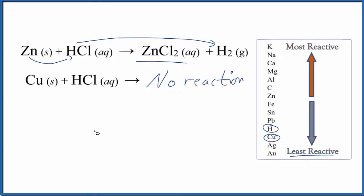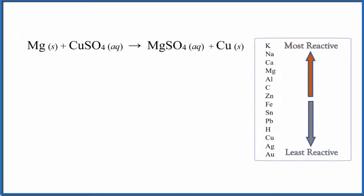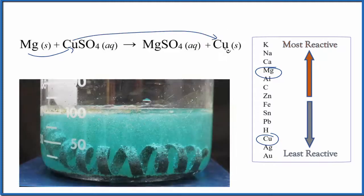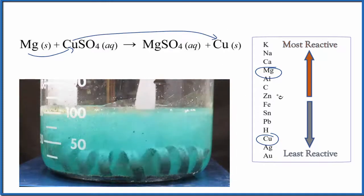Pause and try this one. Will this reaction take place? We find magnesium and we find copper. Magnesium is much more reactive, so the magnesium can push the copper out. In a single displacement reaction, the copper will be by itself. This reaction takes place.